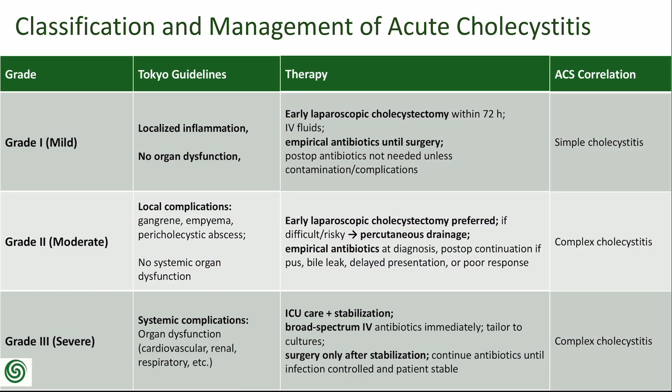The American College of Surgeons classifies cholecystitis into two surgical categories: simple and complex. Simple cholecystitis overlaps with Tokyo Grade 1 — it involves local inflammation confined to the gallbladder without gangrene, empyema, or perforation, and is generally suitable for early cholecystectomy. Complex cholecystitis includes more severe forms and may correspond to Tokyo Grade 2 or 3. If only local complications such as necrosis, empyema, or perforation are present, it aligns with Grade 2; if systemic complications and organ dysfunction occur, it aligns with Grade 3.